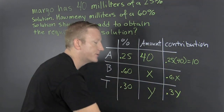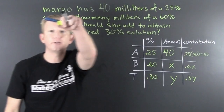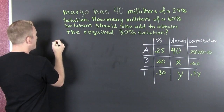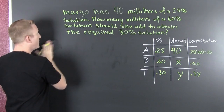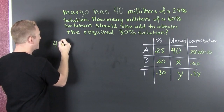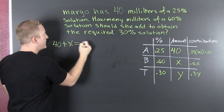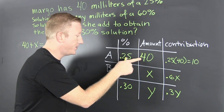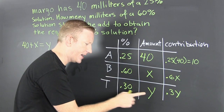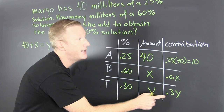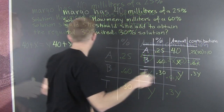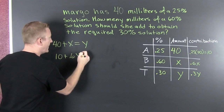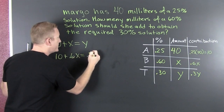There's an amount equation and a contribution equation. The amount equation is: 40 plus X equals Y — this plus that equals the total. The contribution equation is: 10 plus 0.6X equals 0.3Y.